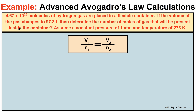In this example problem, 4.67 times 10 to the 25th molecules of hydrogen gas are placed in a flexible container. If the volume of the gas changes to 97.3 liters, then determine the number of moles of gas that will be present inside the container, assuming constant pressure of one atmosphere and a temperature of 273K.